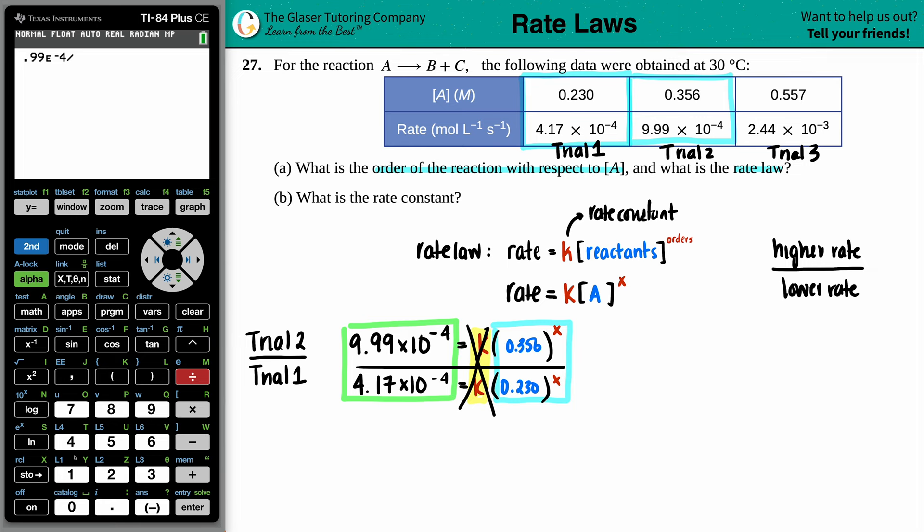So let's see, 9.99 times 10 to the negative fourth divided by 4.17 times 10 to the negative fourth. Oh boy. But don't get scared. Trust the process. Let's see where this is going. Usually they will give you a whole number at the end, but in this case, 2.396. But let's see what's going on on the other side. 0.356 divided by 0.230. Okay. 1.5478. And that's going to be raised to the X value.